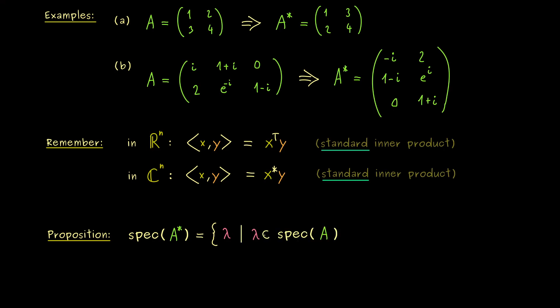This means here I go with lambda through all eigenvalues of A. And then we get the eigenvalues of A star if I use the complex conjugation on lambda. And indeed, that's it. That's the only difference for the eigenvalues of A and A star.